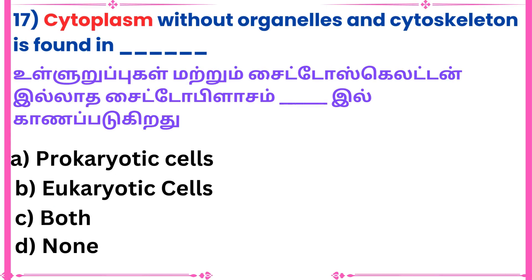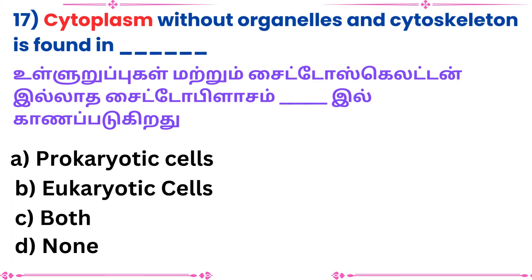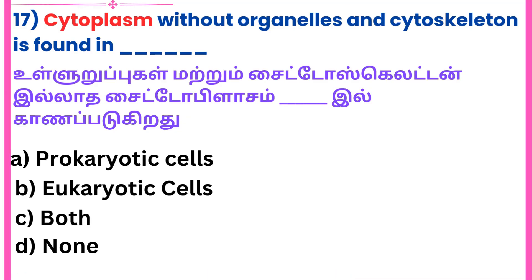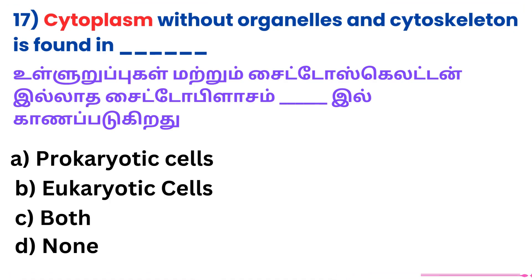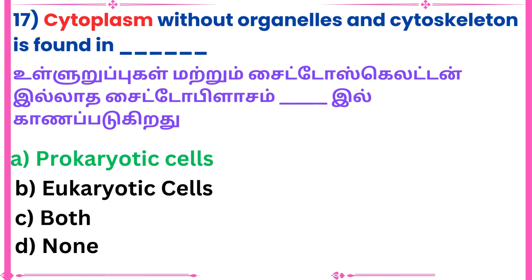Seventeenth question: Cytoplasm without organelles and cytoskeleton is found in dash. Answer: Prokaryotic cells.